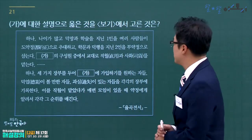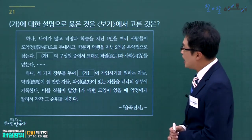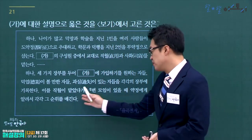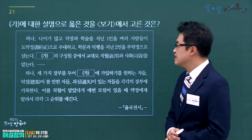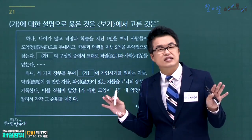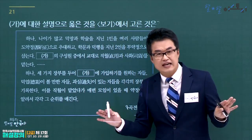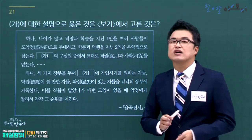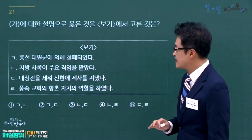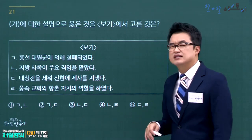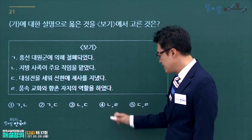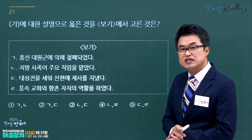약정·직월 등 향촌 자치 규약이 등장하는 기구는 유향소입니다. 향촌에서 지방사족들의 세력을 강화시킨 요소로는 유향소, 향약, 서원이 있습니다. 흥선대원군에 의해 철폐된 것은 서원이고, 유향소는 지방사족이 주요 직임을 맡았으며 풍속 교화와 향촌 자치 역할을 담당했습니다. 대성전을 세워 선현 제사를 지낸 것은 향교입니다. 정답은 4번입니다.